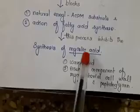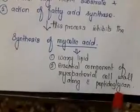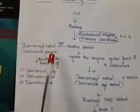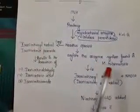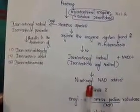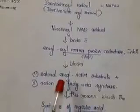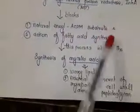Binding with enoyl-ACP reductase blocks the natural enoyl-ACP substrate and the action of fatty acid synthase. Because of this blocking, there is inhibition of synthesis of mycolic acid. Mycolic acid is an essential component of the mycobacterial cell wall along with peptidoglycan.